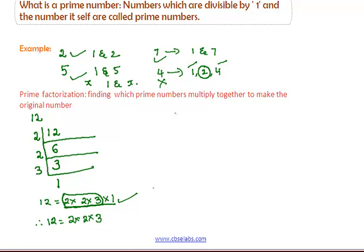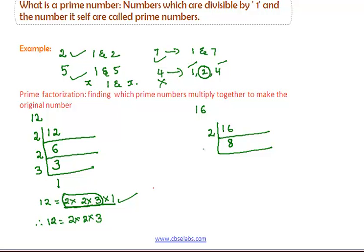Now, take another example: find the prime factorization of 16. Put 16 in this manner and draw the lines. We have to divide 16 with prime numbers. The first prime number is 2. Clearly, 2 divides 16, so we divide. Now, we have to divide the number 8 with a prime number. Clearly, 2 also divides 8, so put 2 in this place.